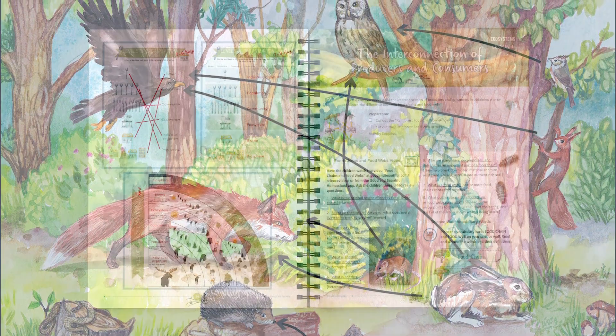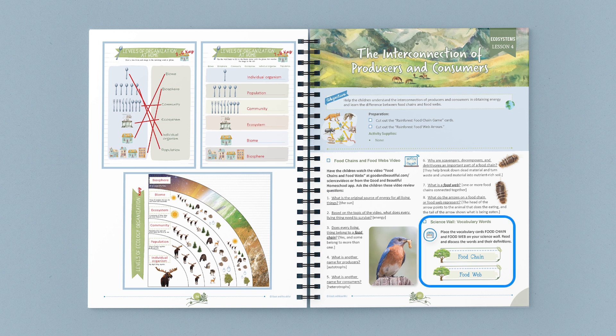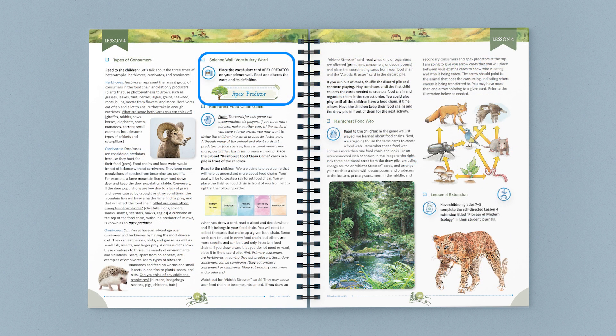It is followed by a discussion that includes topics such as the energy source for all living things, the explanation of the food chain, and the role each part of the food chain plays. Three new vocabulary words are introduced: food chain, food web, and apex predator.